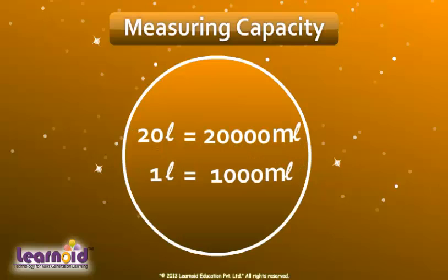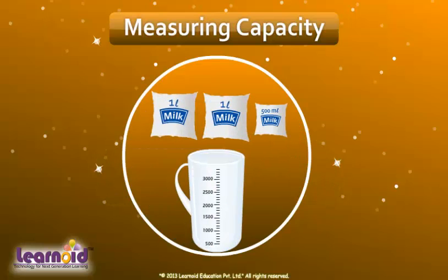As we know, 1 liter contains 1000 milliliters. We can convert given quantity into milliliters. For example, 2 liters and 500 milliliters milk will be equal to 2500 milliliters.